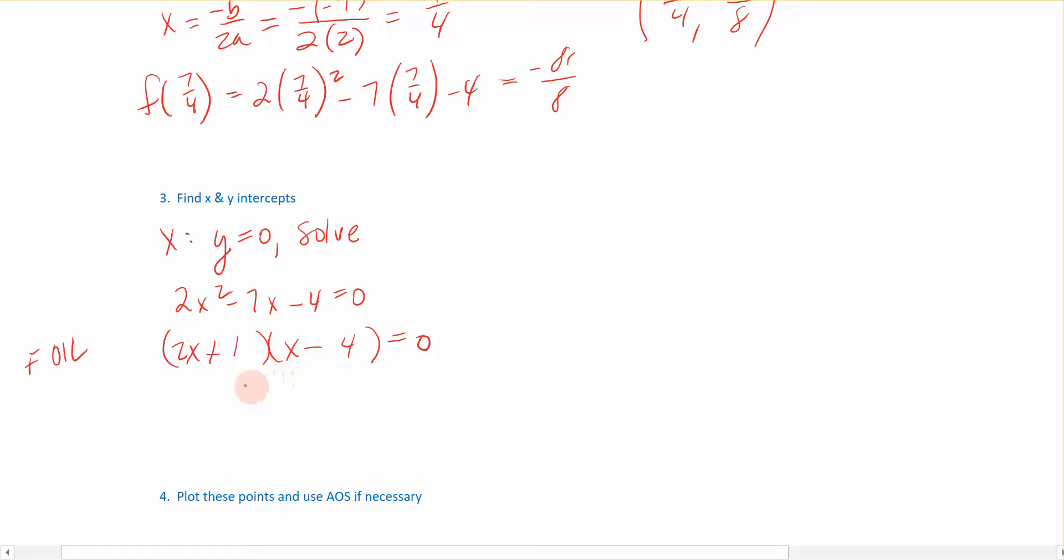Now that we have this factored, we apply the zero product property which says I can take each of the factors and set them equal to 0 and solve. 2x + 1 = 0 and x - 4 = 0. This leftmost equation, I'm going to subtract 1, divide by 2 and I get x is negative 1 half. That's one place it crosses the x-axis. The second place is when x equals 4. So these are the x-intercepts of my function.